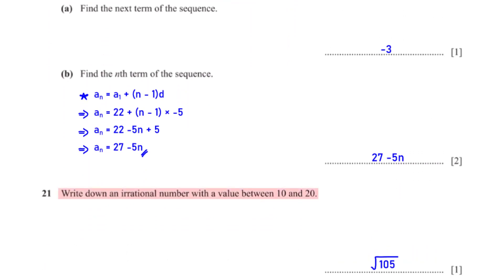Write down an irrational number with a value between 10 and 20. An irrational number is any number that cannot be expressed as a fraction. An irrational number in the given range is the square root of 105.